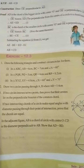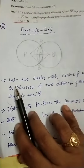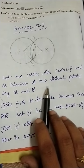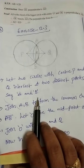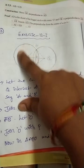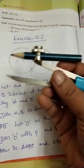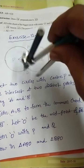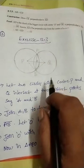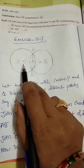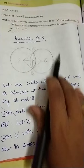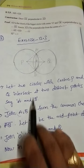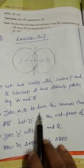Now we need to prove that. Let two circles with center P and Q intersect at two distinct points, say A and B. You can take the compass, set any radius, and with that same radius draw two circles — the two circles which intersect at two points. P and Q are the centers of the circles, and these circles intersect at two distinct points A and B. Now join A and B to form the common chord.